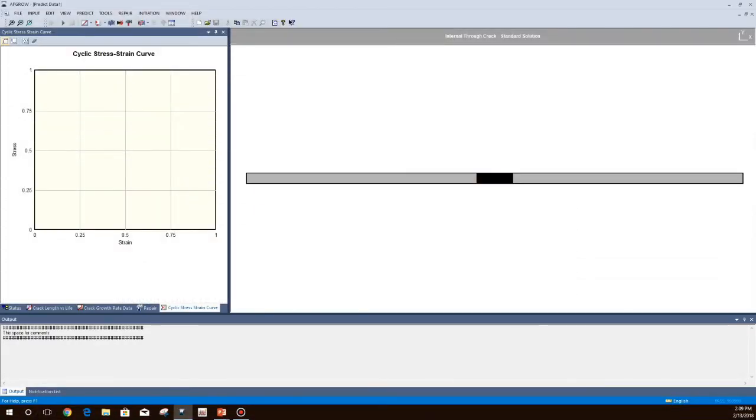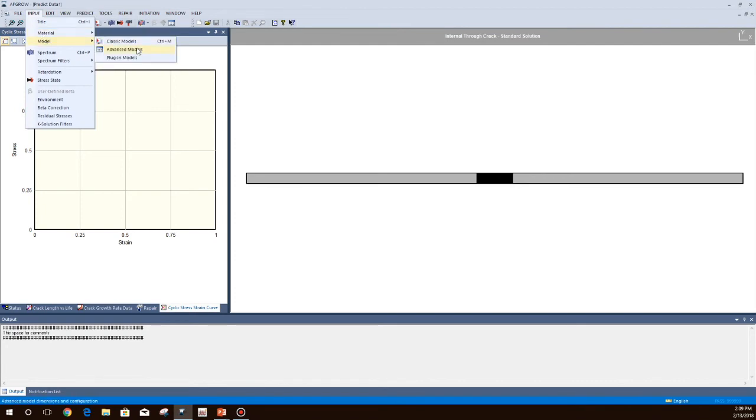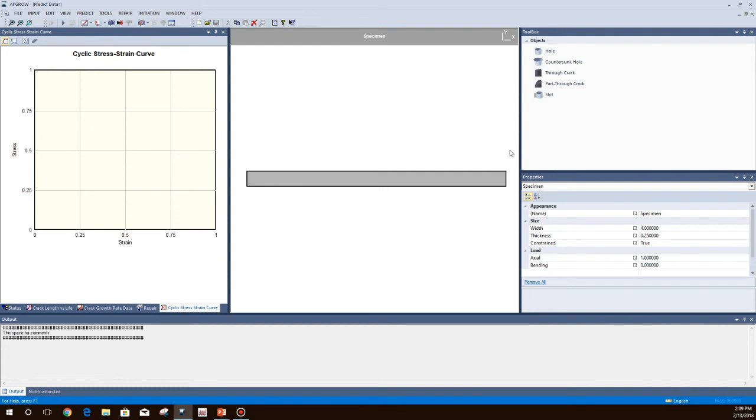To use the new solution, go to input, model, advanced model. Next, drag a countersunk hole to the specimen. Then you'll add a part through crack to the knee of the hole.